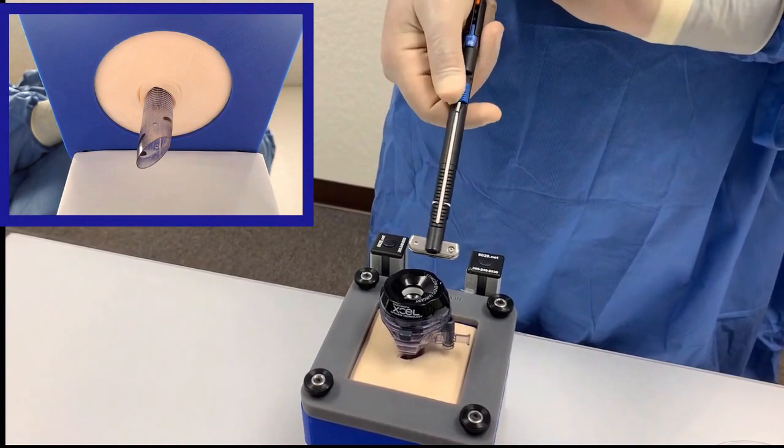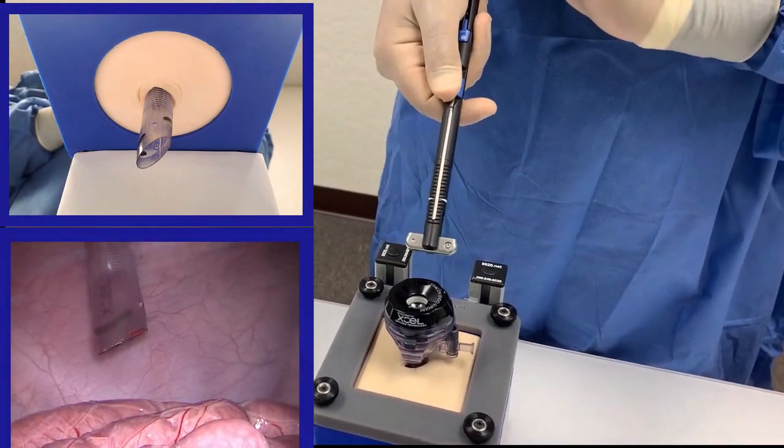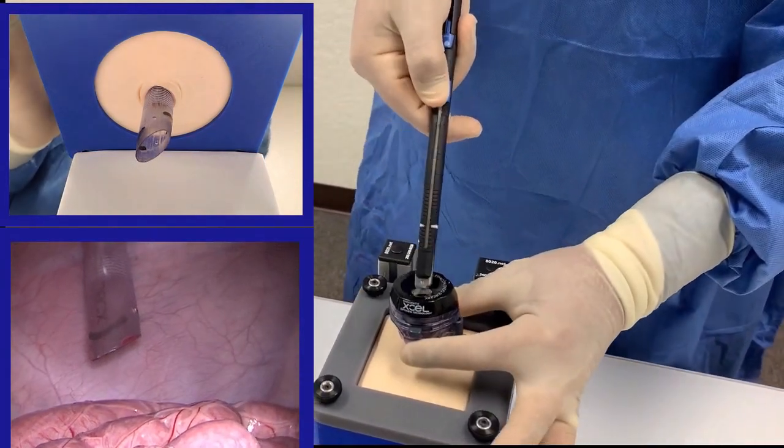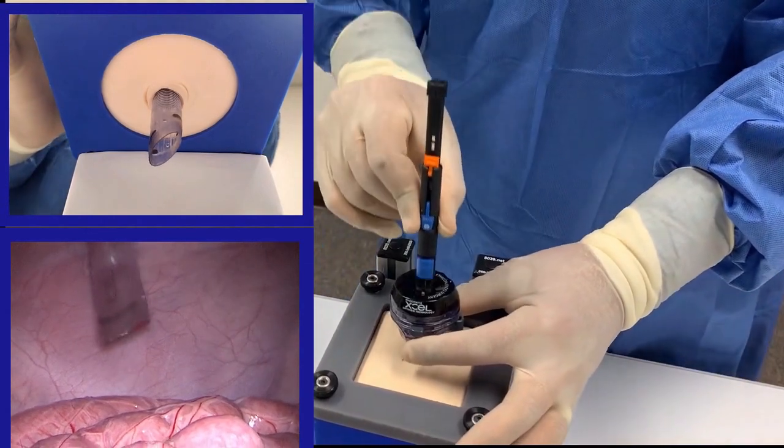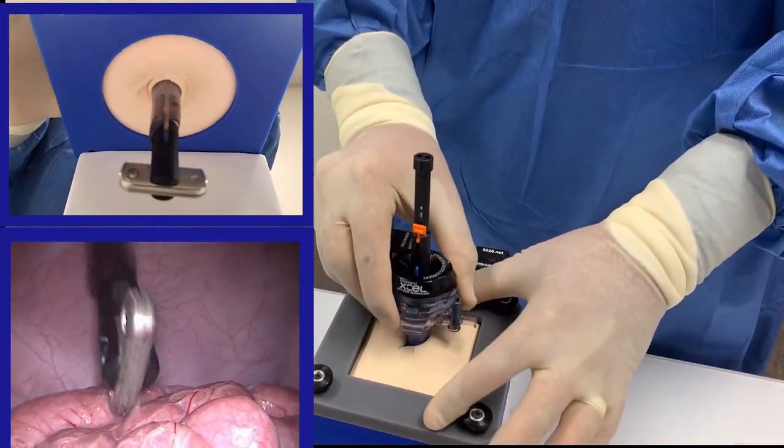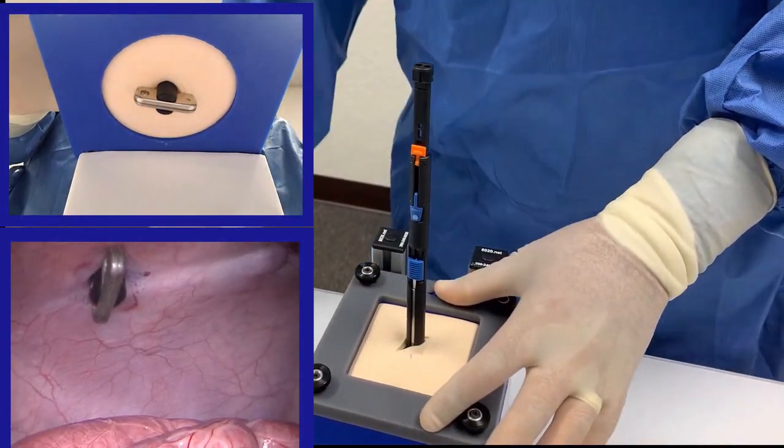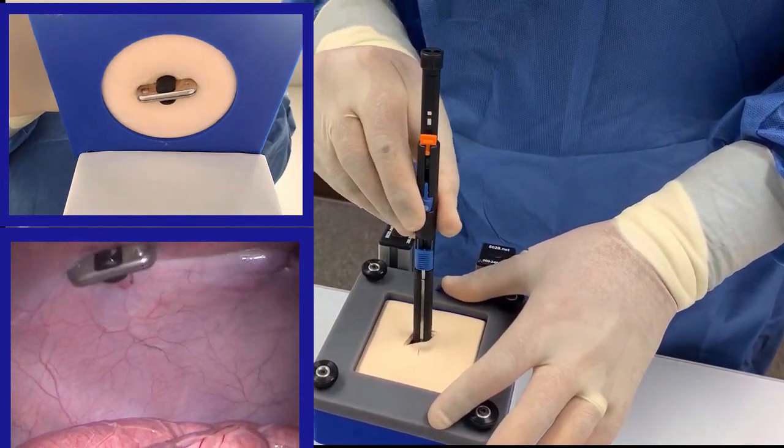M-Close is easy to use. M-Close can be inserted percutaneously or through any 12mm or larger trocar. Once the t-bar automatically springs open, you can remove the trocar and position the t-bar into the desired orientation.